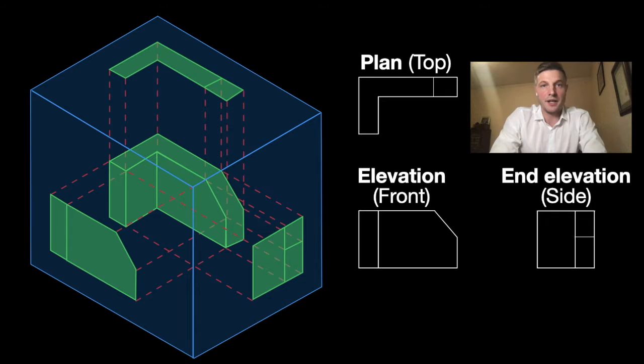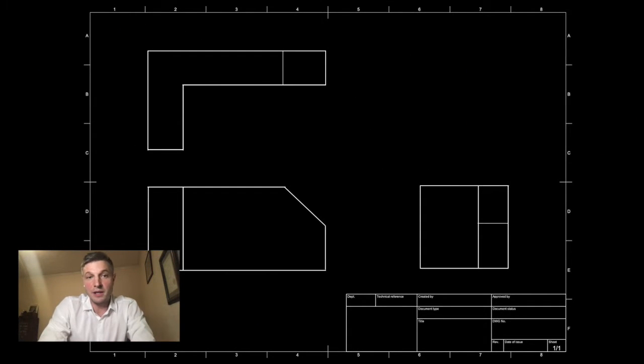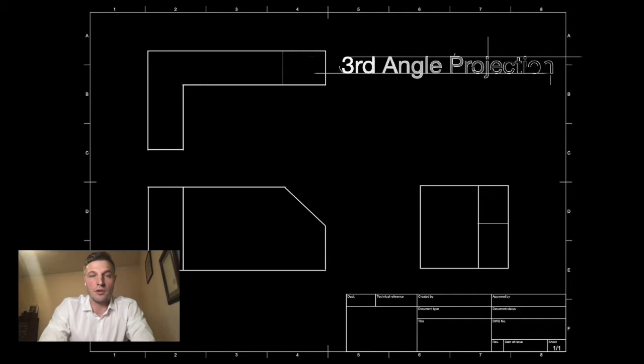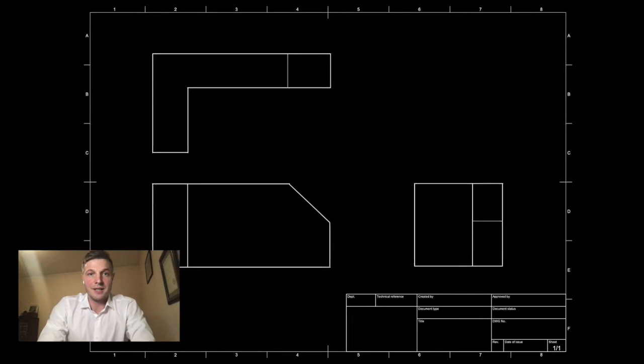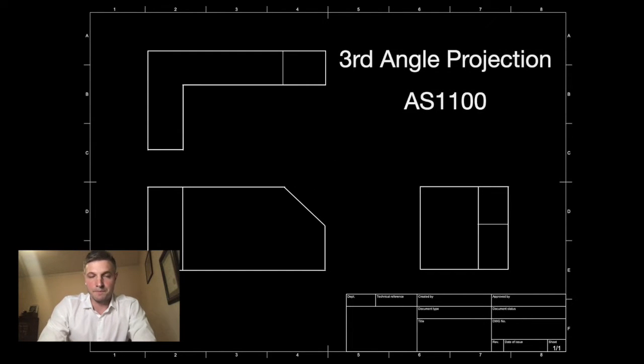They're going to end up looking like this on our paper. If you have them in this arrangement with the plan on the top, the elevation underneath, and the end elevation on the right, this is what's known as third angle projection. If it were that we had it the reversed way around, this is known as first angle projection. But in Australia the standard is third angle projection, so only draw it like this. This is part of the AS1100 standards, which is the standards used for technical drawing in Australia.